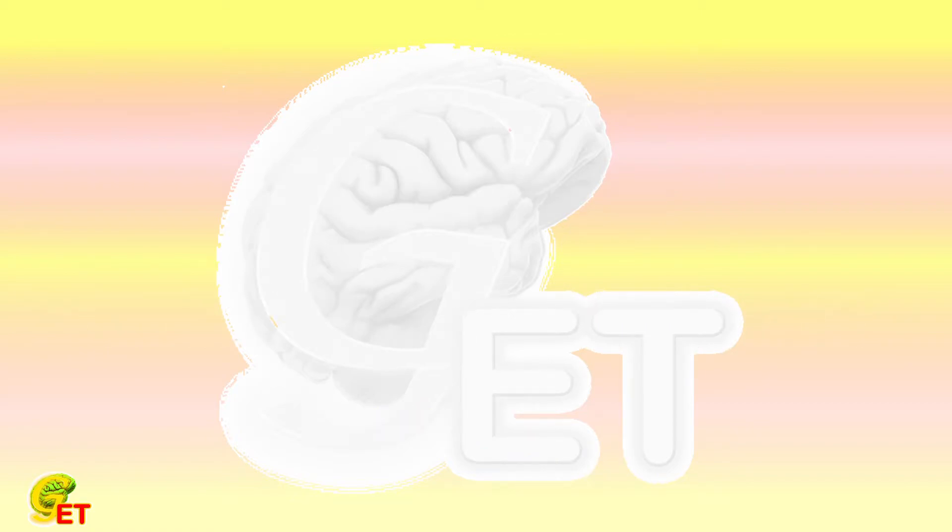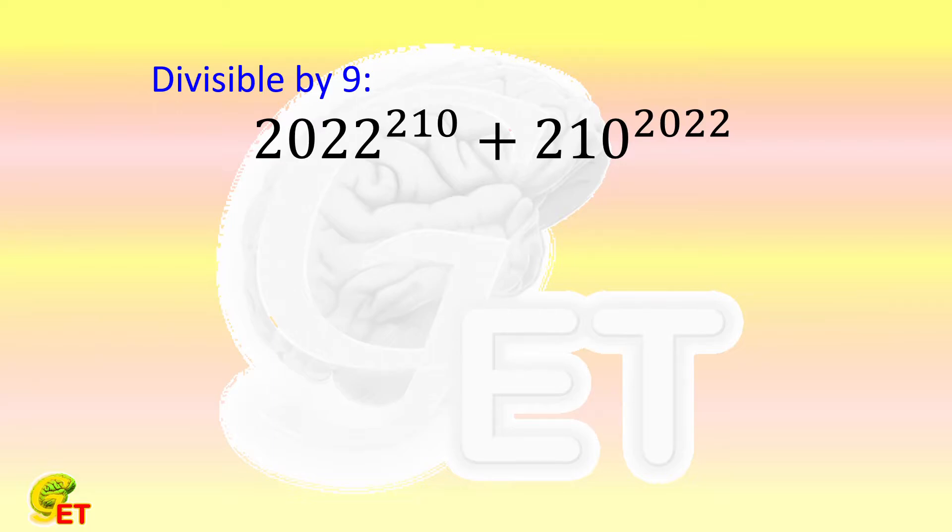Let's first take a look at if it is divisible by 9. This big number has two terms. If both terms are divisible by 9, the summation must be divisible by 9. Although this is only sufficient but not necessary, it does not hurt if we check it first.